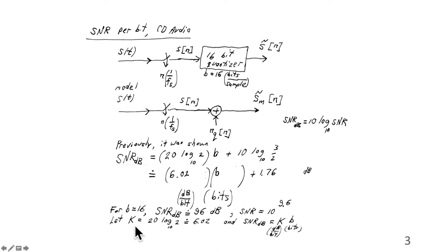Let capital K equal 20 log base 10 of 2, this term here, which is approximately 6, 6.02. And consequently, the SNR in dB would be approximately KB. K is this value in dB per bit, and B is the number of bits. And this is true for a large number of bits where this residual term becomes unimportant.